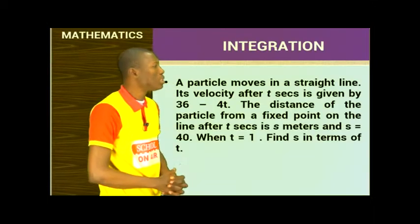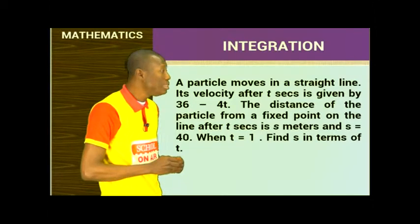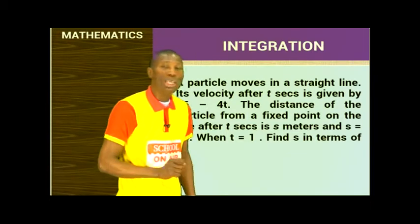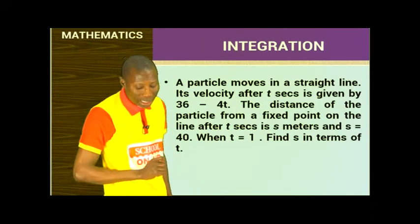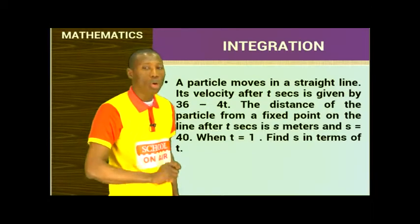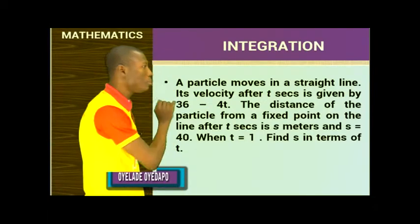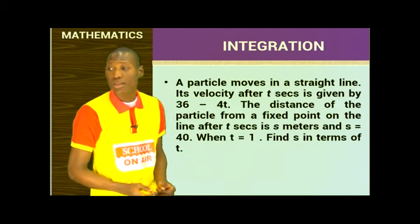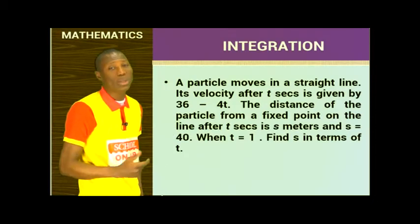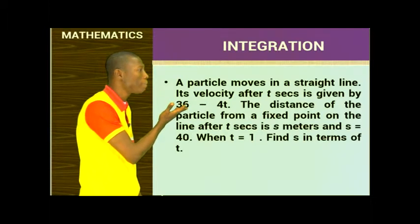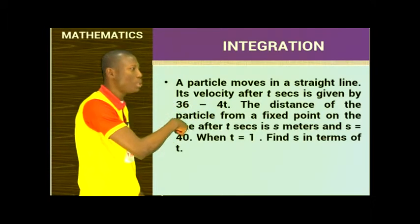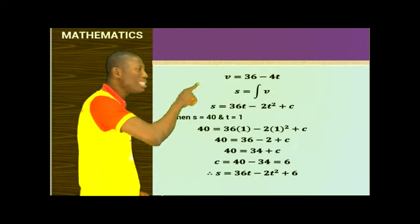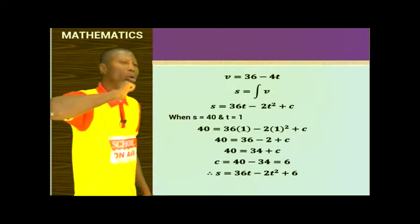Here's another question: a particle moves in a straight line. Its velocity after t seconds is given by V equals 36 minus 4t. The distance of the particle from a fixed point on the line after t seconds is S meters, and S equals 40 when T equals 1. Find S in terms of T. When I taught integration, I mentioned velocity-time, acceleration-time, and displacement-time graphs. Here we have velocity and need to find displacement S.